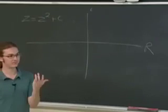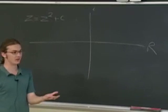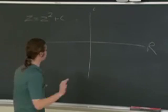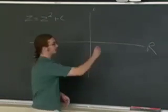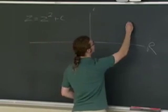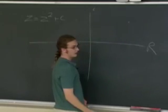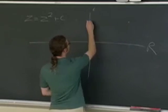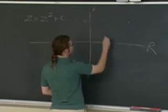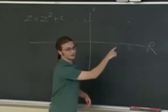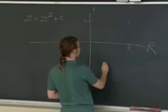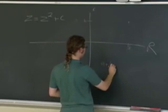When you square a complex number, first of all, a complex number is a point in this plane. So say this point is, this is b, and this is a. This point is represented by a plus bi.